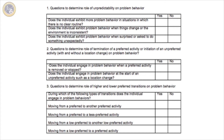Also, advanced notice may not be recommended for preferred to less preferred activity transitions. As a method to identify potential strategies — transition warnings, visual cues, visual schedules — I developed a questionnaire based on this line of research. It has really helped me to streamline the process to provide and analyze these strategies. The questionnaire includes questions to determine the role of unpredictability of problem behavior, the role of determination of a preferred activity or initiation of a non-preferred activity, and this information will be useful in determining when and how to use transition warnings.